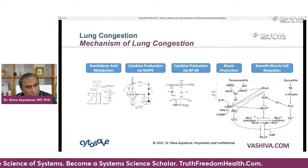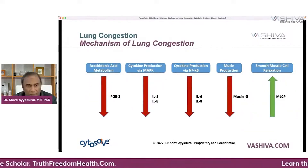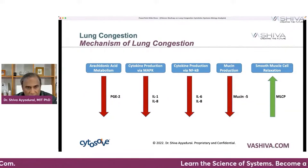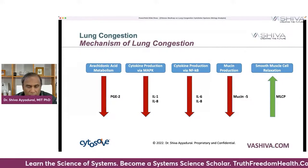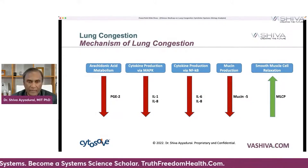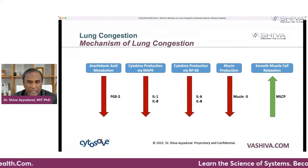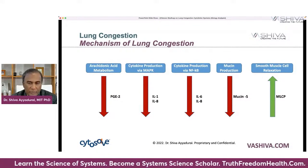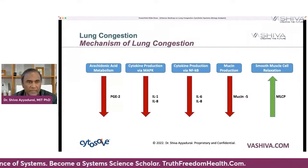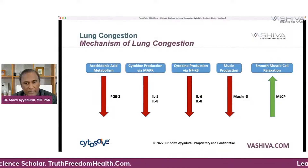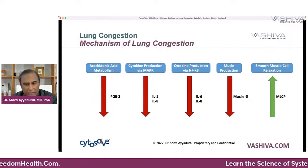So to reduce lung congestion, we want to reduce PGE2 produced during arachidonic acid metabolism, reduce IL-1 and IL-8 from cytokine pathways, and reduce IL-6 and IL-8 from the NF-kappa-beta pathway. We want to down-regulate those four cytokines, reduce mucus production, and increase MLCP — because increasing MLCP gives you smooth muscle relaxation, which helps alleviate lung congestion.